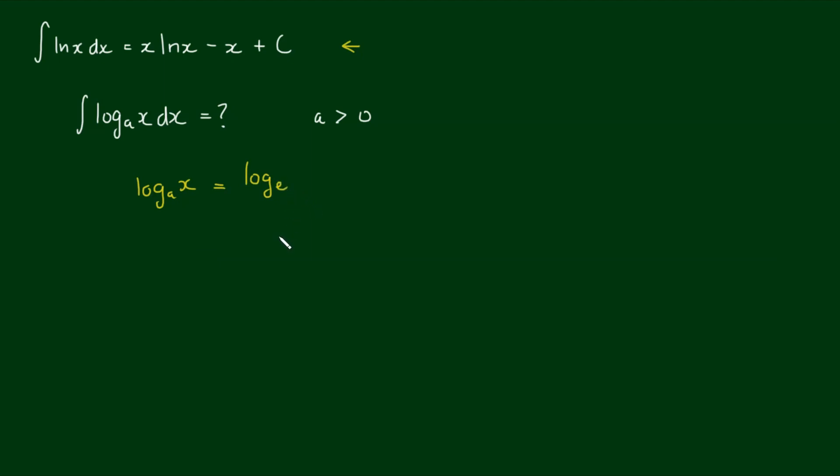So log to the base a of x is equal to log to the base e of x divided by log to the base e of a. So this is the change of base rule.